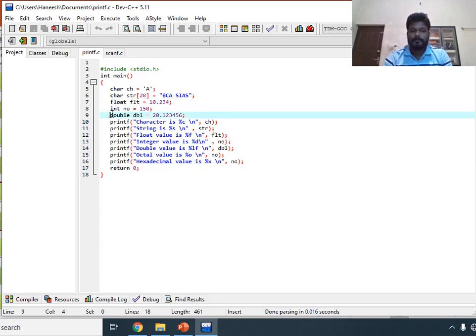Then double dbl 20.123456. To display that we can use double value is %lf. For displaying octal we can use this statement, and for displaying hexadecimal value you can use %x number.